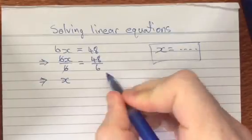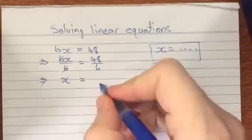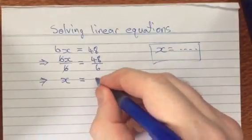And over on the right hand side, 48 divided by 6, now that's something we should be able to do, or you can chuck it in your calculator if you like. You should find that that's equal to 8.